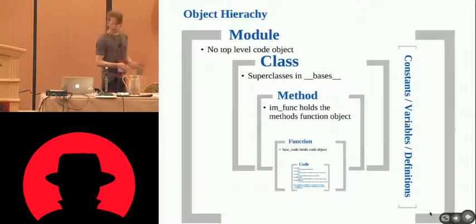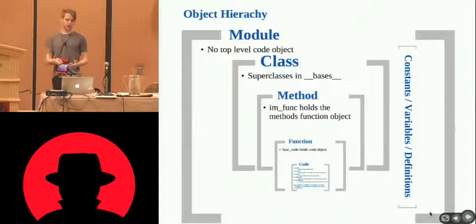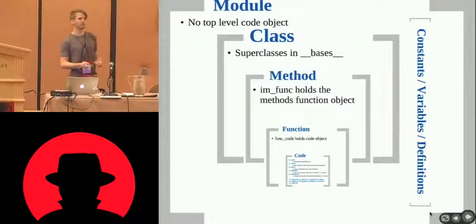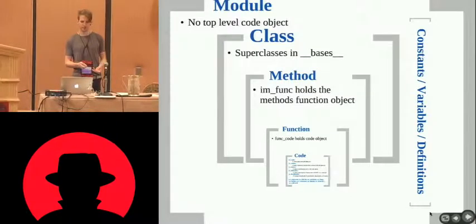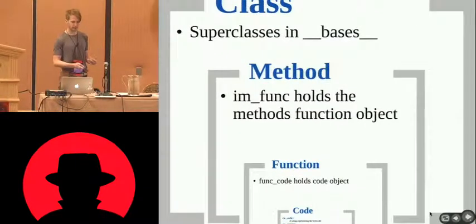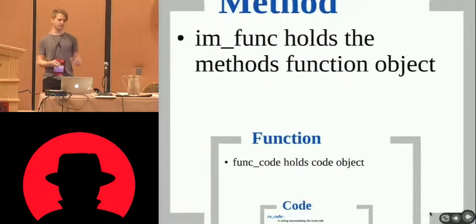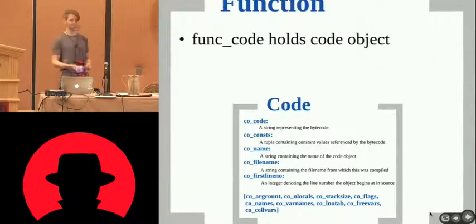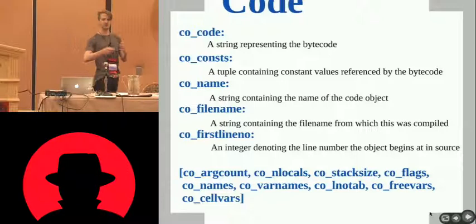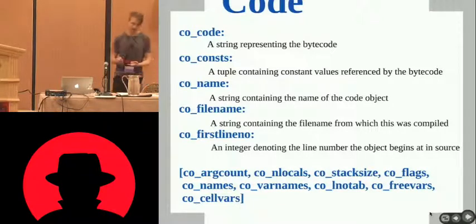So, object hierarchy. This is how things stack up in Python land. There's a module object — the module object doesn't have any top-level code object, done for performance reasons, which is highly annoying when you're trying to reverse things out. Within a module object you can have classes. The superclasses are kept in the attribute _bases. Classes have methods. Methods have a function via im_func, which holds the function object. The function object has a function code object, which holds a code object — and this is what we want.